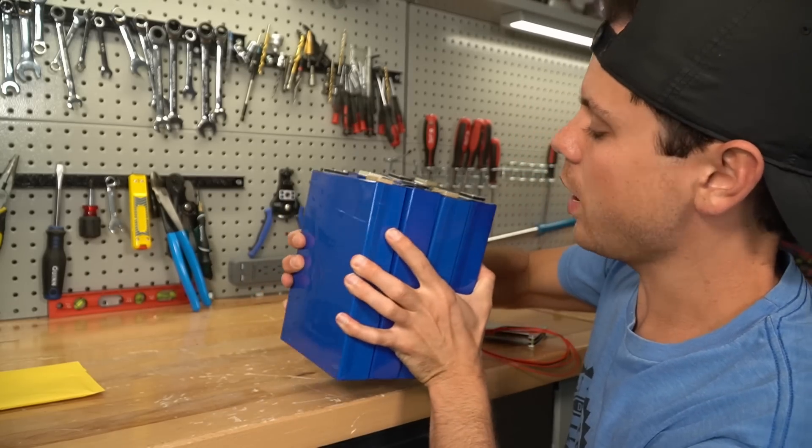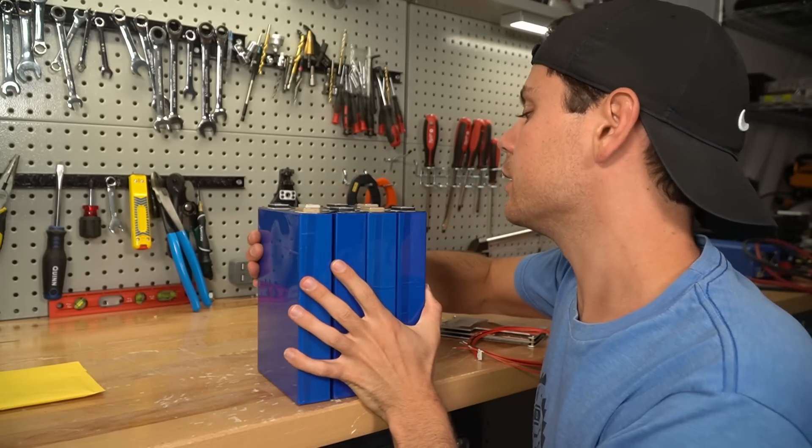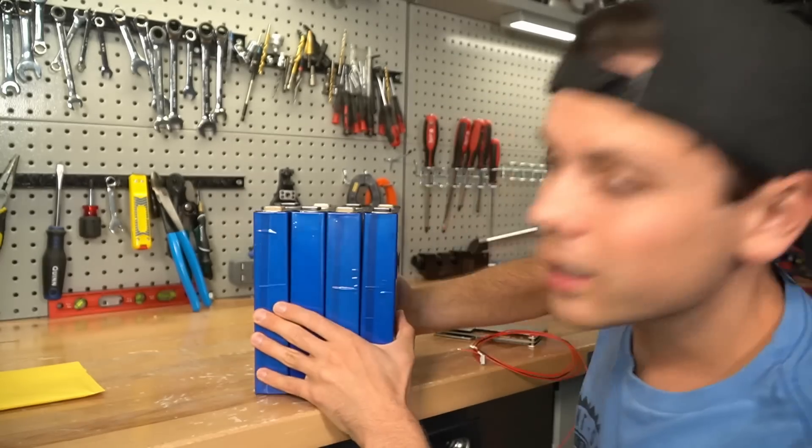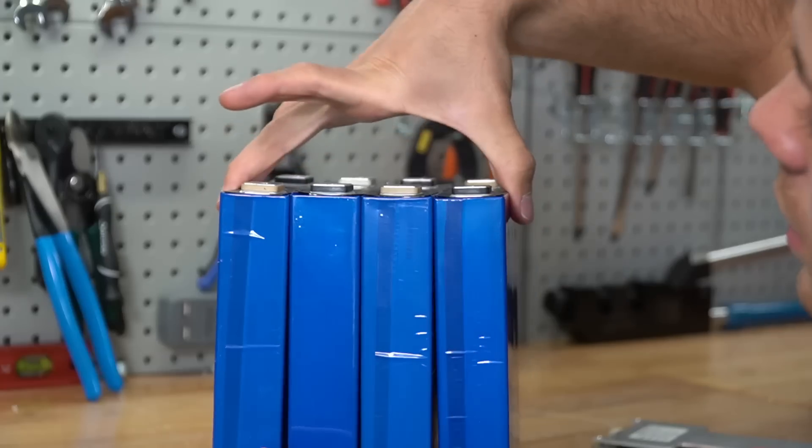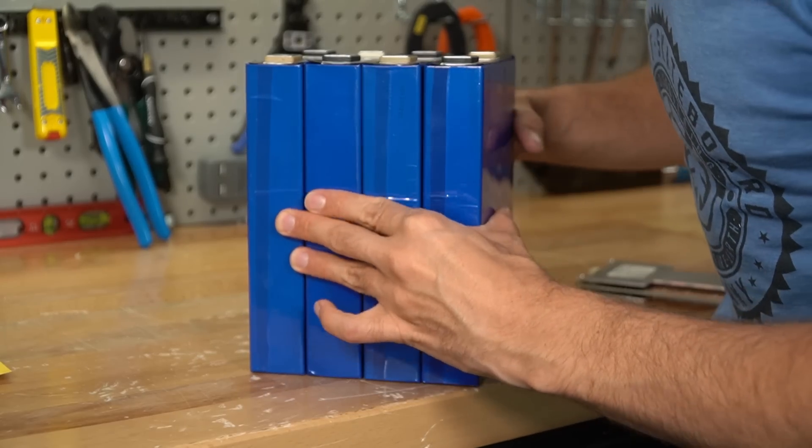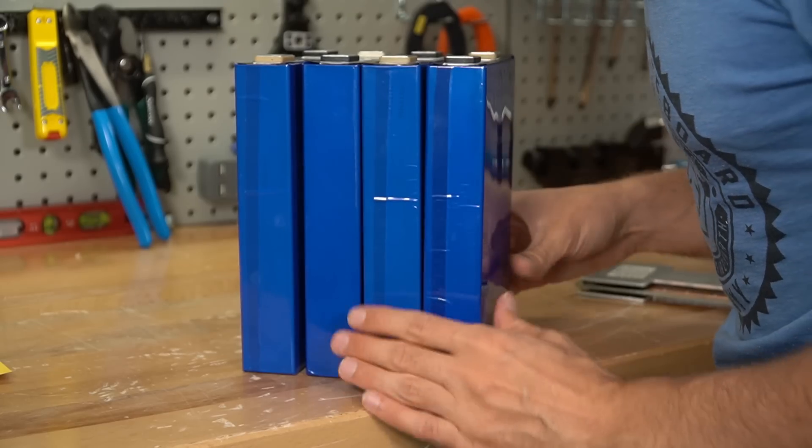They're small and pretty lightweight. These look like CATL cells. But uh oh, I see a problem. Yeah, check this out guys. You guys see all those gaps between the cells? All of them have some gas creation inside and they are swollen a little bit.